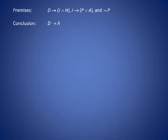The premises of this problem are D implies J and H, J implies P or A, and not P. The conclusion is D implies A. So what strategy could we use to obtain this?